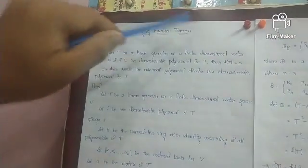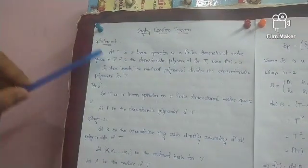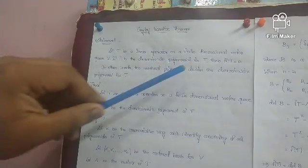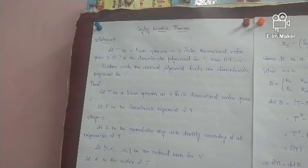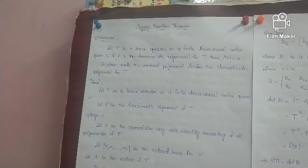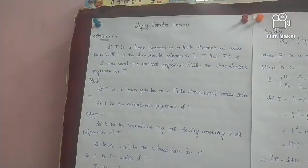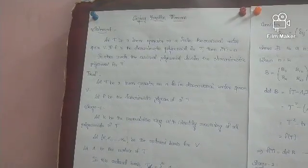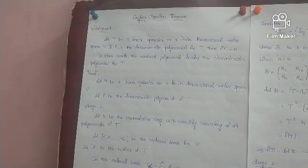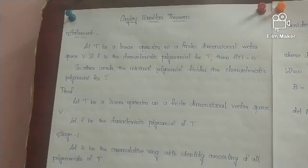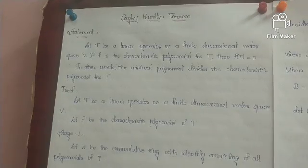I am going to talk about the Cayley-Hamilton theorem. Let T be a linear operator on a finite dimensional vector space over a field. That field vector space is an additive group — an additive ring. Now F is the characteristic polynomial for T. The characteristic value is the eigenvalue.